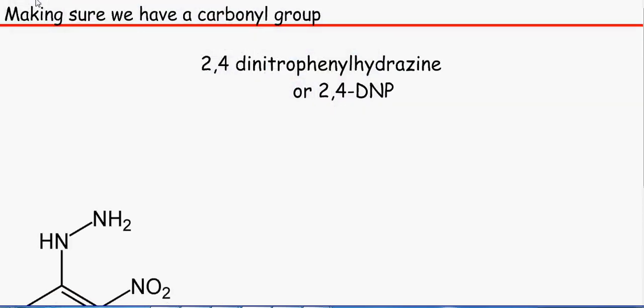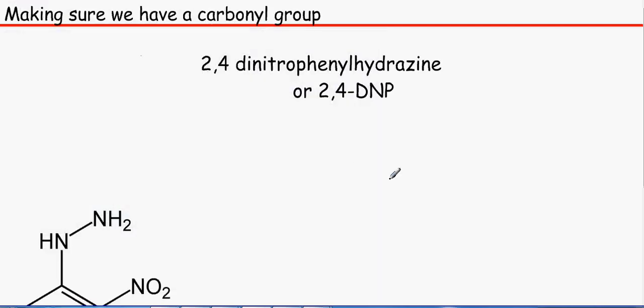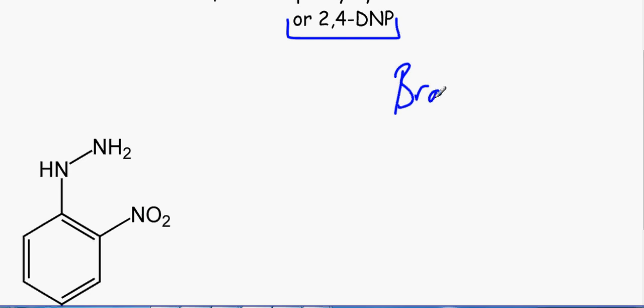So the next test we want to do is just to make sure we actually do have a carbonyl group in the test tubes. Because we have oxidised it to make a carbonyl. So we just need to check that we have carbonyl groups because alcohols do make carbonyl groups. And we use 2,4-dinitrophenyl hydrazine or 2,4-DNP, which looks like this.